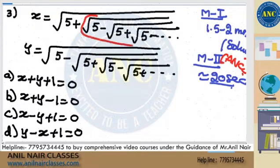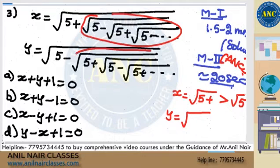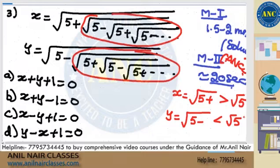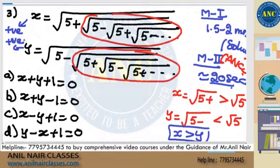Already we discussed: if you have root of 5 plus, that means x is greater than root 5. For y, root of 5 minus means it is less than root 5. So x is greater than root 5, and y is less than root 5 — that means x is greater than y. Root always gives a positive value, so x is positive and y is positive.